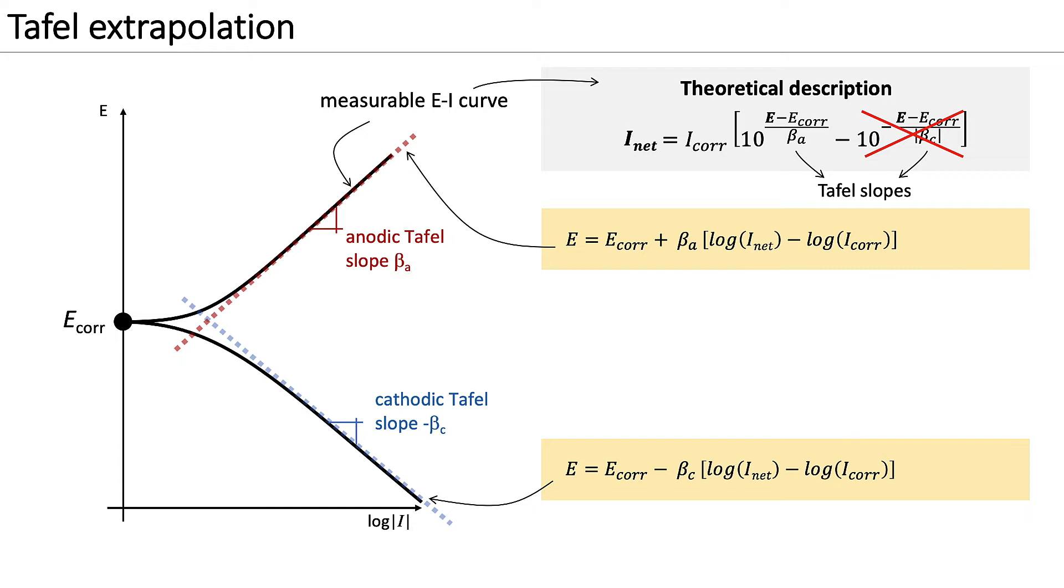Now we come to the key idea of the Tafel extrapolation technique. If we measure a sufficient portion of the black curve, we can determine the linear Tafel lines and extrapolate these to the corrosion potential. The current on the Tafel line at E-corr equals the corrosion current I-corr.